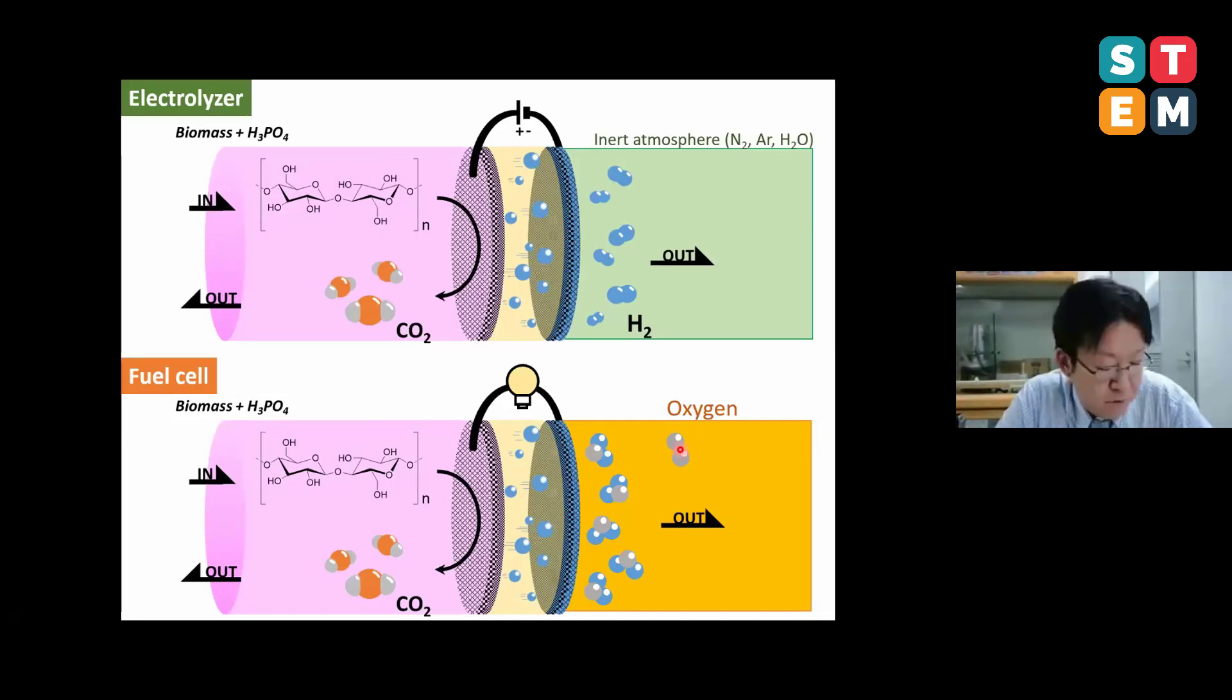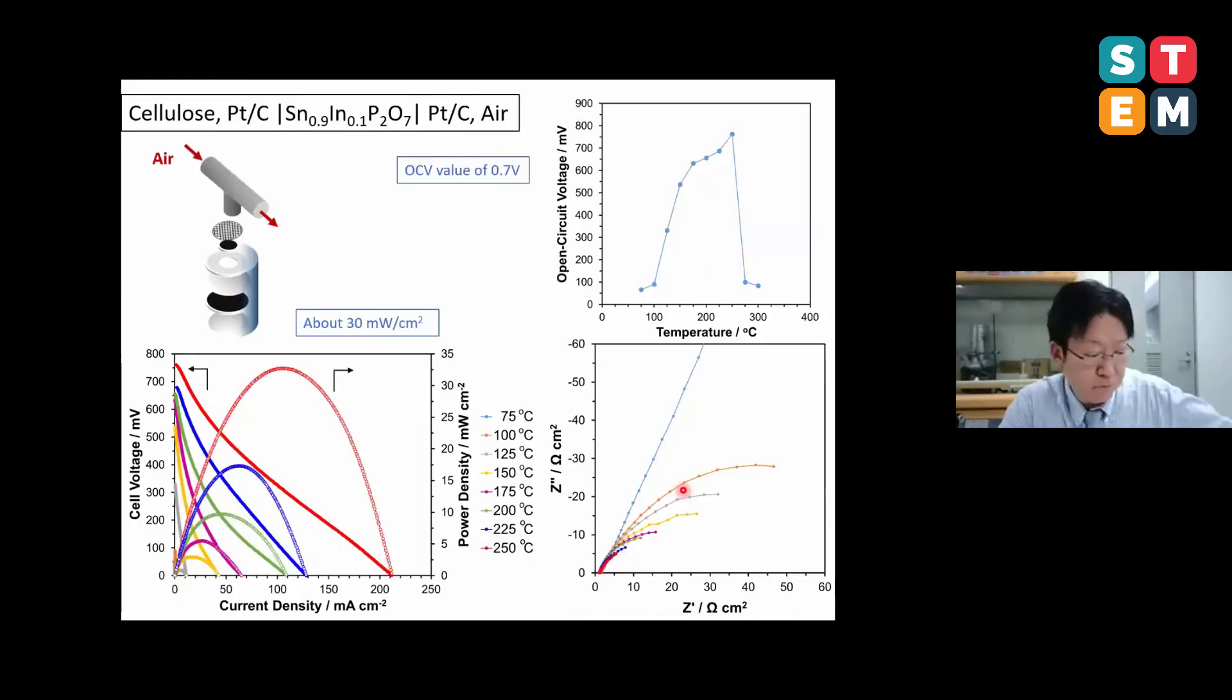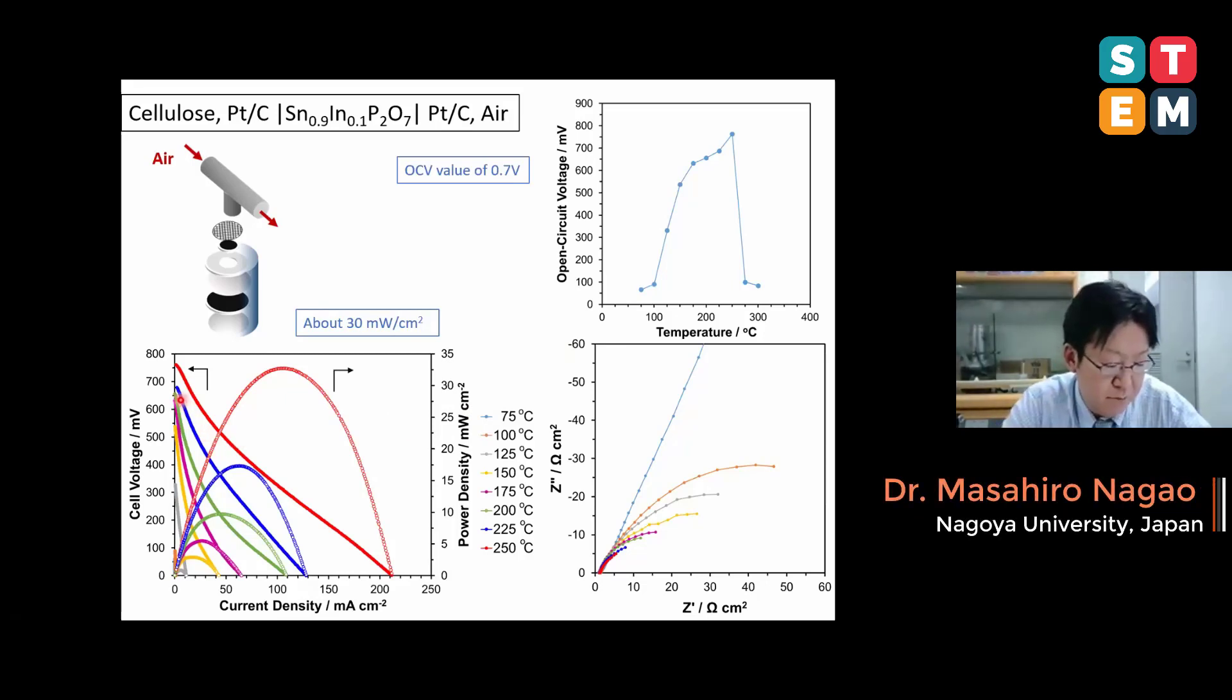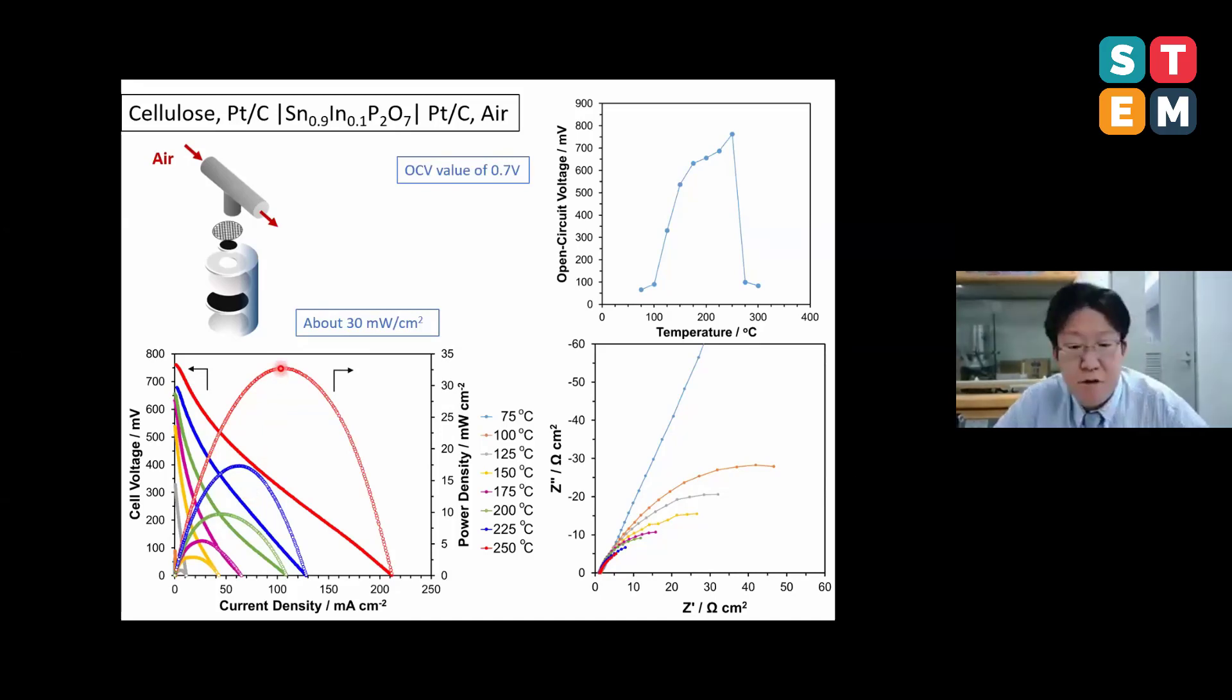I have told about hydrogen production from biomass. But if we used air or oxygen in cathode chambers, we can produce electricity. In this case, this is a fuel cell. So we introduced air to the cell and measured the fuel cell performance using cellulose as a fuel. The open circuit voltage of the fuel cell increased with increasing temperature, and the resultant OCV reached around 0.7V at 250 degrees. The obtained power density increased with increasing temperature, and we can obtain about 30 mW per square cm when cellulose is used as a fuel.